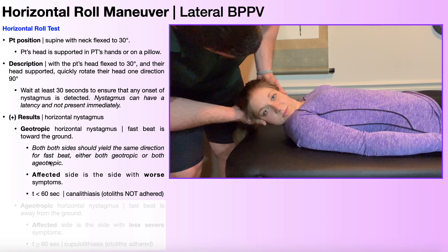The other important thing about geotropic nystagmus is that the affected side is always the side with worse symptoms. If you see geotropic nystagmus and the patient reports that left rotation had worse symptoms, then the left side is the affected side. The affected side is always the side with worse symptoms with geotropic nystagmus.